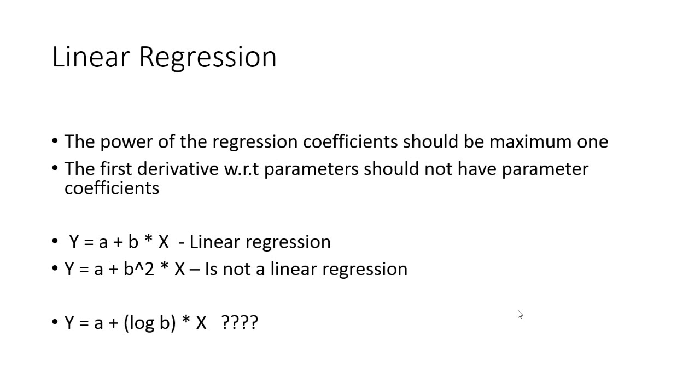What is linear regression? A regression equation is known as linear regression if the power of the regression coefficient is maximum one, and the first derivative with respect to the parameter should not have the parameter coefficient.